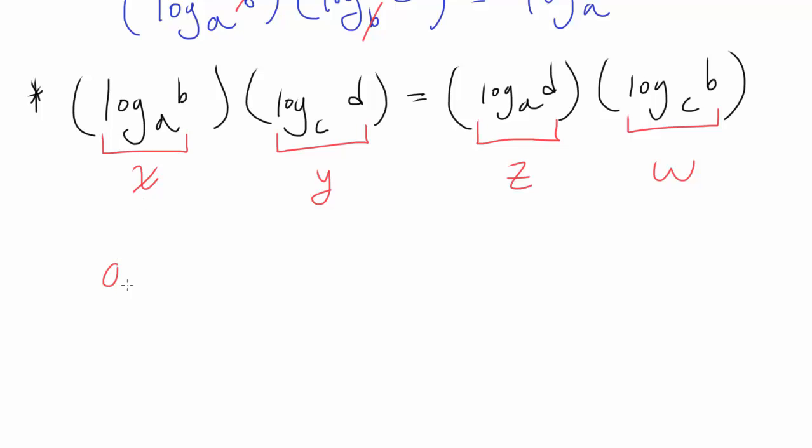Log base A of B equals x, so A to the x equals B. Log base C of D equals y, so C to the y equals D. Log base A of D equals z, so A to the z equals D. And log base C of B gets you C to the w equals B. Now, what can we do?